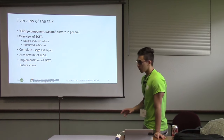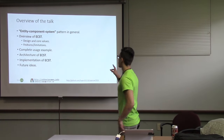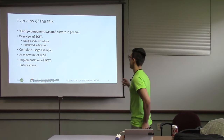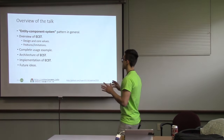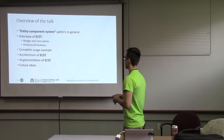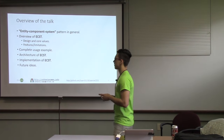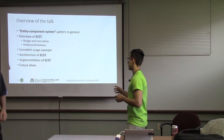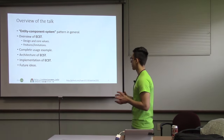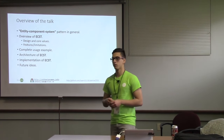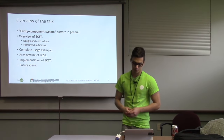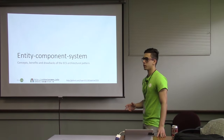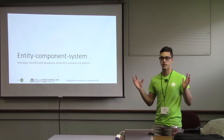In this talk we're going to cover the entity component system pattern in general, then cover my library which is called ECST. We're going to look at the design and its features, a complete code usage example, then the architecture of the library and its various components, the implementation, and some considerations for the future. So how many of you are familiar with the concept of entity component systems?